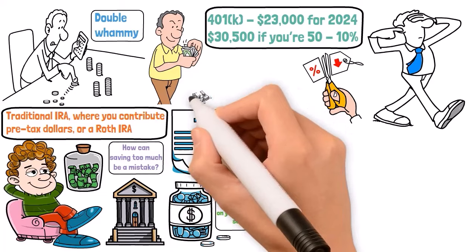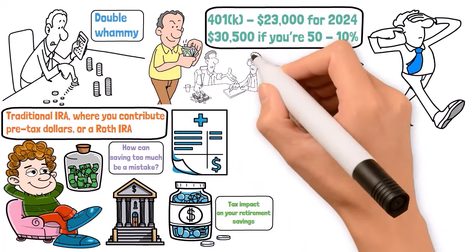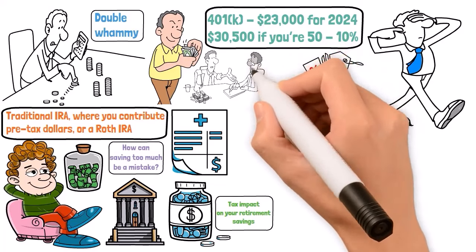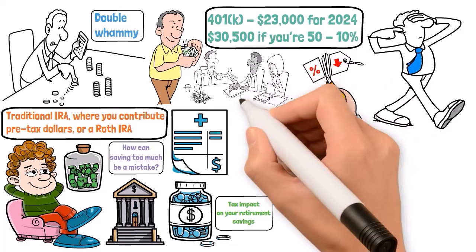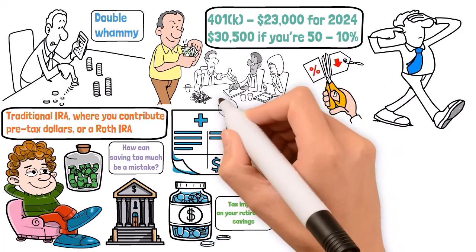And don't forget, Medicare isn't a catch-all. It covers a lot, but not everything. You'll still have out-of-pocket costs for premiums, deductibles, and co-pays. Plus, long-term care isn't typically covered, and that can be a huge expense. So, have you planned for healthcare costs in your retirement budget?